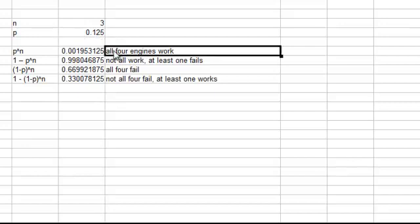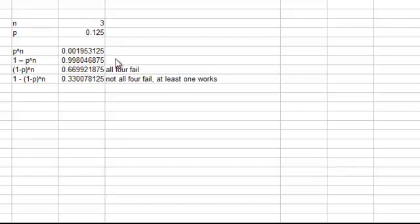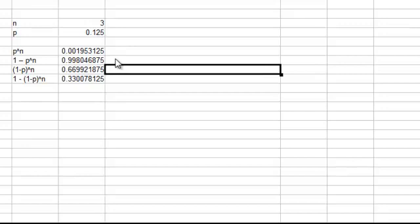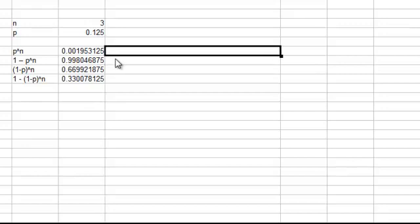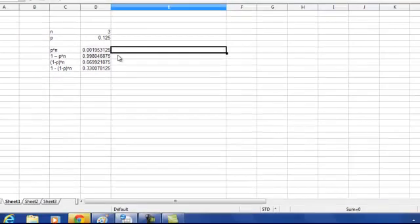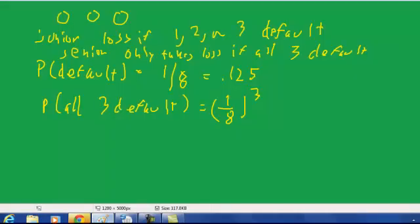And better, since it's no longer four engines, let me just erase all that stuff. And this is what we're interested in. The all three of them default is 0.0019. So let's take that back to our notes. So what did we have here? We had equals 0.0019.